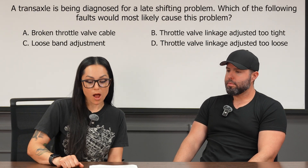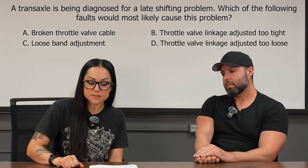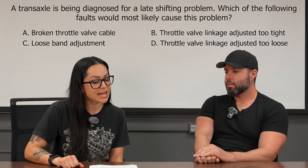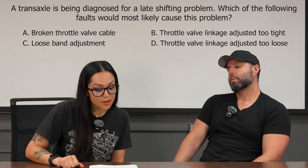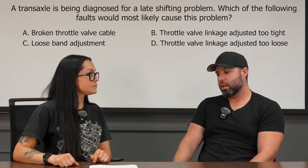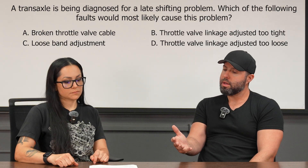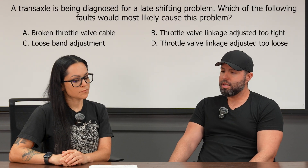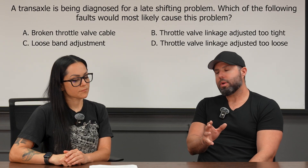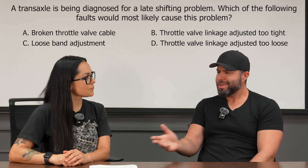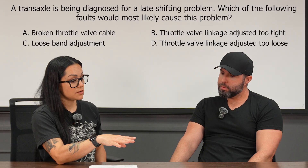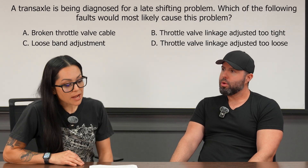A transaxle is being diagnosed for a late shifting problem. Which of the following faults would most likely cause this problem? A, broken throttle valve cable. B, throttle valve linkage adjusted too tight. C, loose band adjustment. And D, throttle valve linkage adjusted too loose. Looking at these answers, three of the four have to do with a throttle valve problem. Also, B and D are opposites — adjusted too tight versus too loose — so generally it's going to be one or the other.